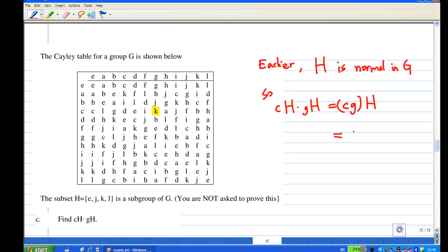So this equals kH. Since the cosets are disjoint and H equals {e, j, k, l}, notice that k is inside H. Therefore H is also equal to kH.